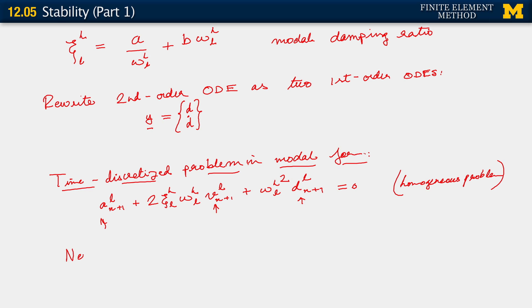So we get Newmark family equations relate d n plus 1 at L, v n plus 1 at L, and a n plus 1 at L. Those are the equations that involve the parameters gamma and beta.